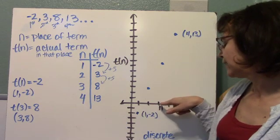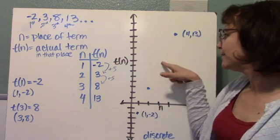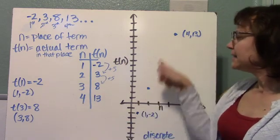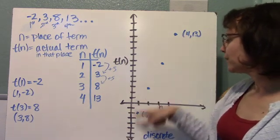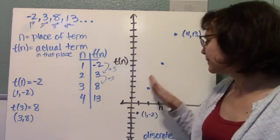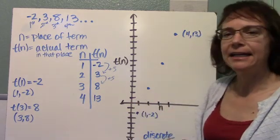All of these points are on my graph. t of 3 equals 8. If I go over here to 3, when n equals 3, t of 3 equals 8. I can see that this is a linear progression. I'm adding 5 every time, increasing by 5, and it makes a line.